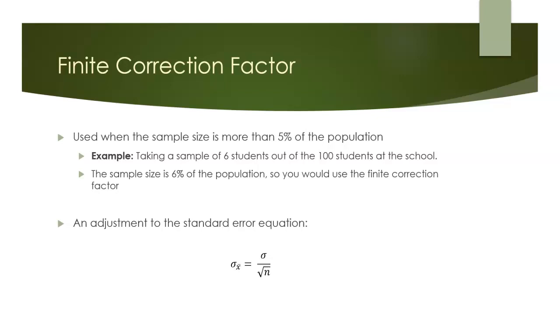If we have to use the finite correction factor, we toss that onto the end. So big N is your population size. That would be 100 from our example from earlier. Little n is still our sample size, so that would be 6. And so we would include the finite correction factor when calculating our standard error.